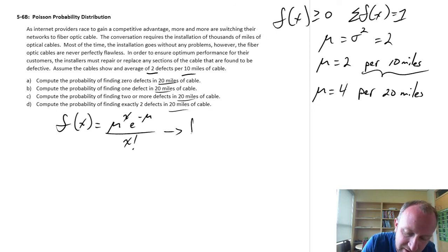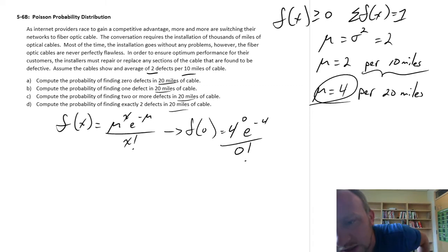So this is mu to the x e to the negative mu over x factorial. And so in this case, f of 0, our mu is our scaled mu, so this would be 4 to the 0 e to the negative 4 over 0 factorial. Now I'm going fast, I know, because we're not actually going to do it this way.